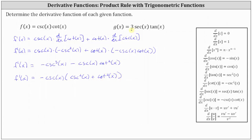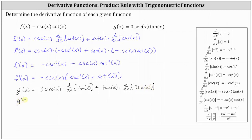Now let's find g prime, given g of x equals negative 3 cosecant x tangent x. g prime of x is equal to the first function of 3 secant x times the derivative of the second function, which is the derivative of tangent x with respect to x, plus the second function of tangent x times the derivative of the first function, which is the derivative of 3 secant x with respect to x.